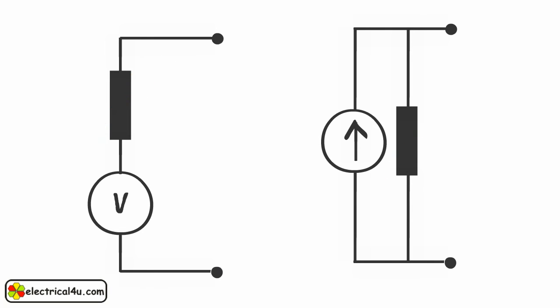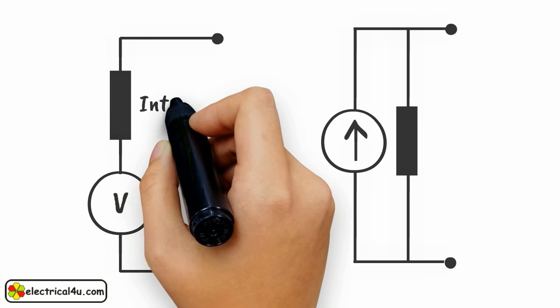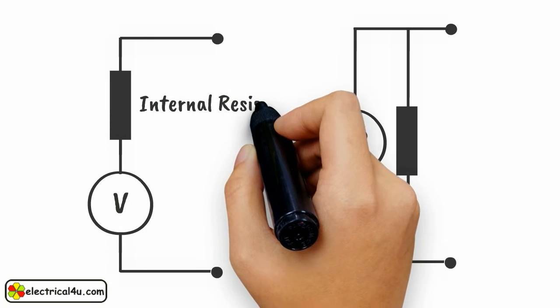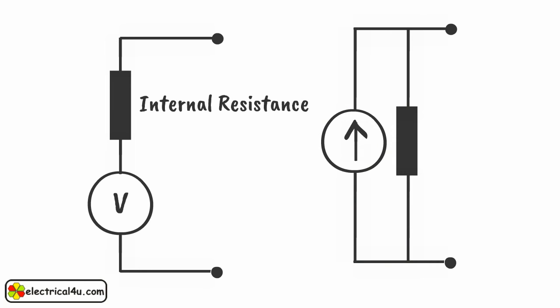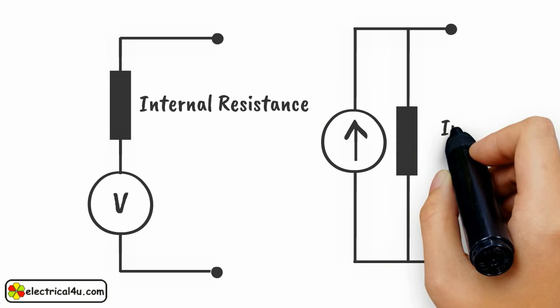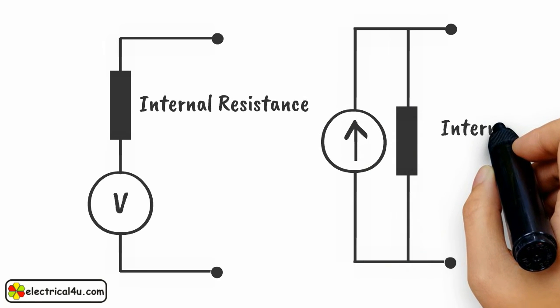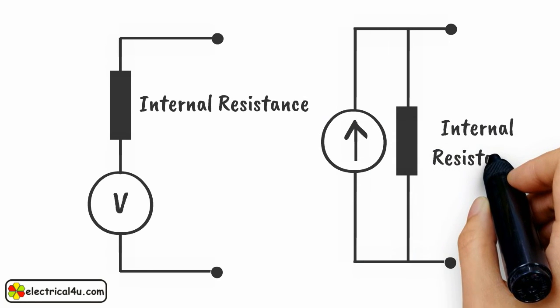A practical voltage source is shown as an ideal voltage source in series with a resistance. This resistance is called the internal resistance of the source, as shown here. A practical current source is shown as an ideal current source in parallel with its internal resistance, as shown here.